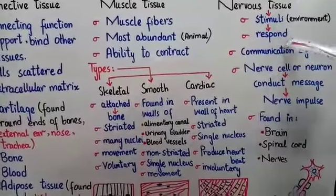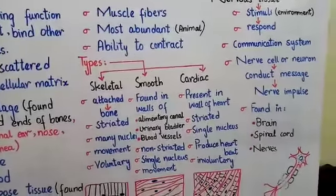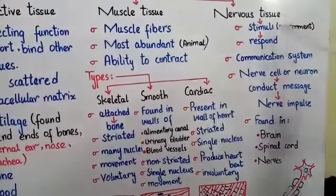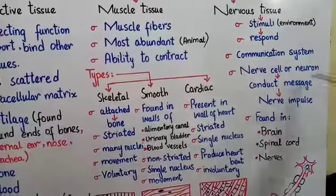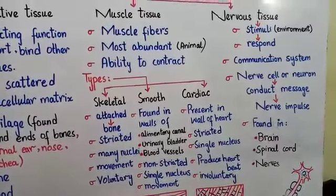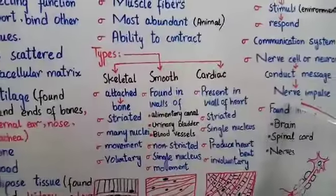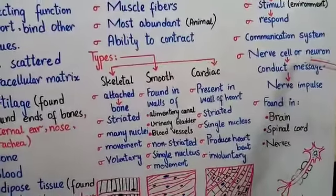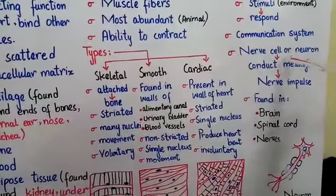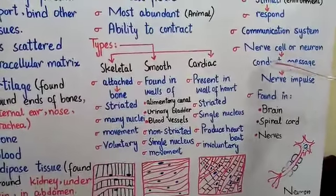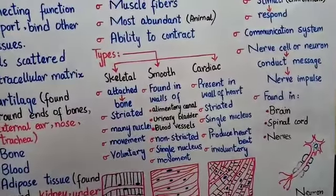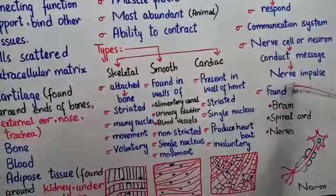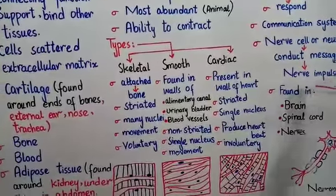Nervous tissue forms a communication system. This tissue is mainly composed of nerve cells, which you can call neurons. Neurons are specialized to conduct messages in the form of nerve impulses. This is the structural and functional unit of your nervous system — conducting messages from one part of the body to another in the form of a nerve impulse.